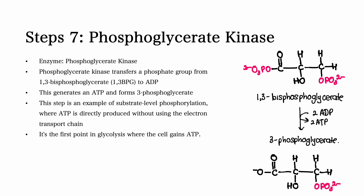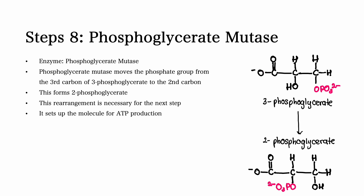If you want to learn more about the electron transport chain, check out our video on that in our channel. Step number eight. The main enzyme involved in step number eight is phosphoglycerate mutase. In this step, phosphoglycerate mutase moves the phosphate group from the third carbon of 3-phosphoglycerate to the second carbon, forming 2-phosphoglycerate. This rearrangement is necessary for the next step and sets up the molecule for ATP production.